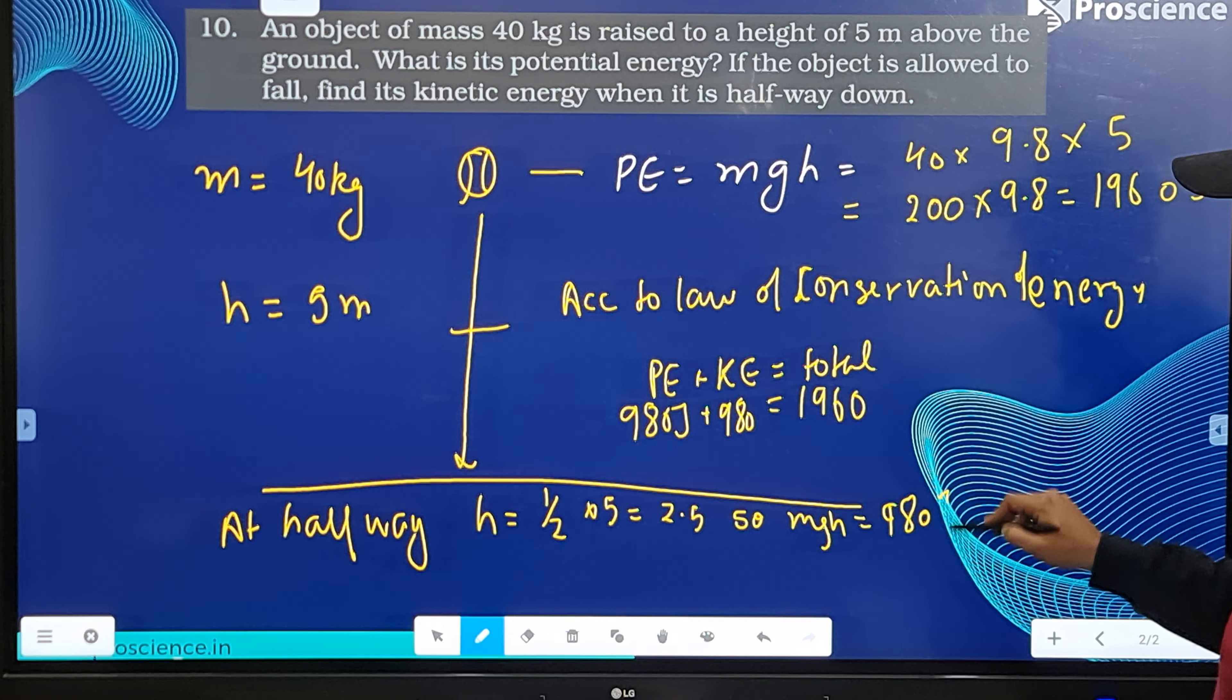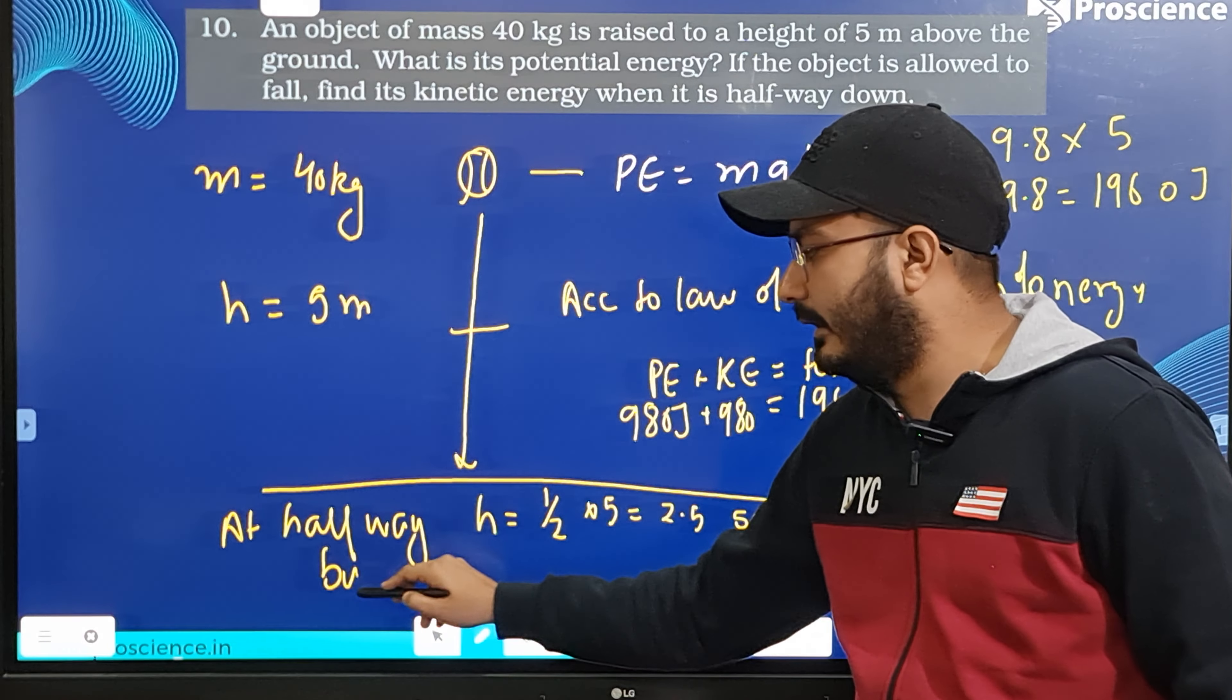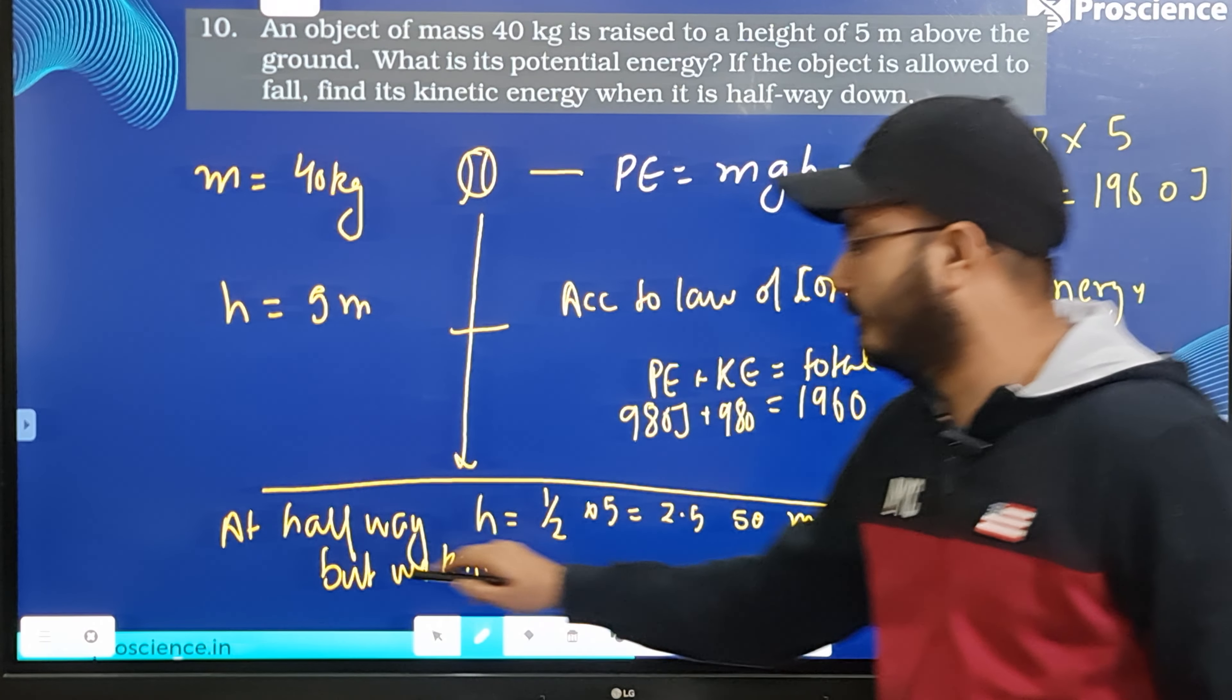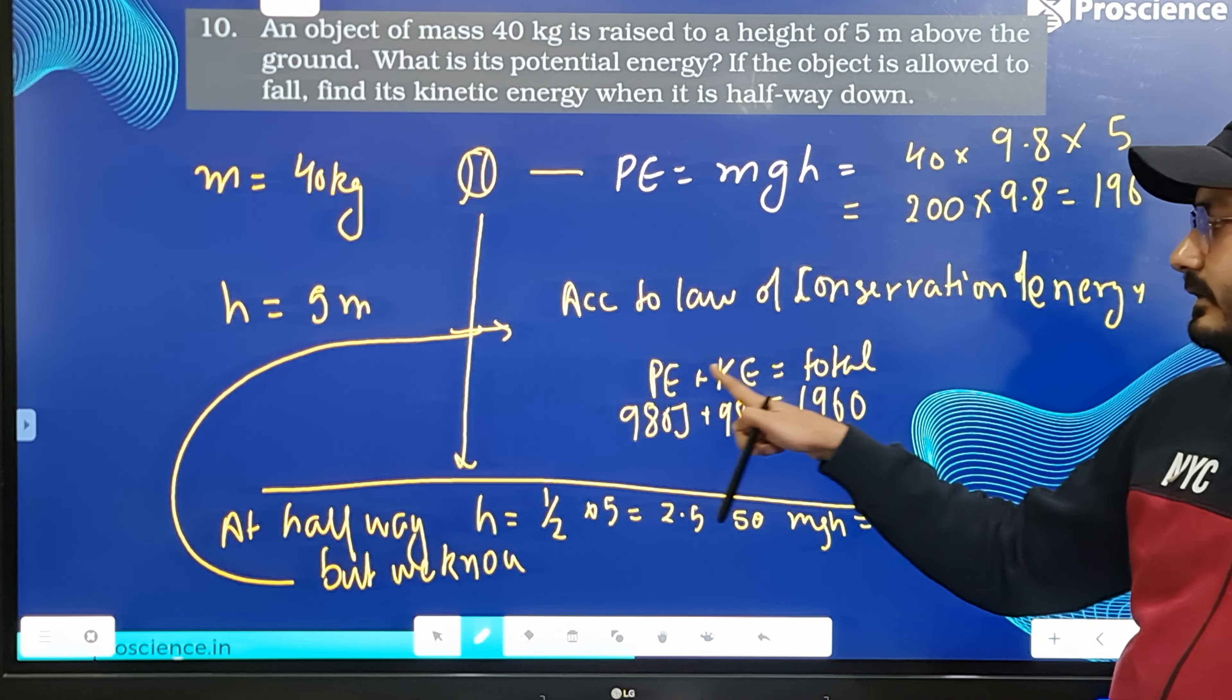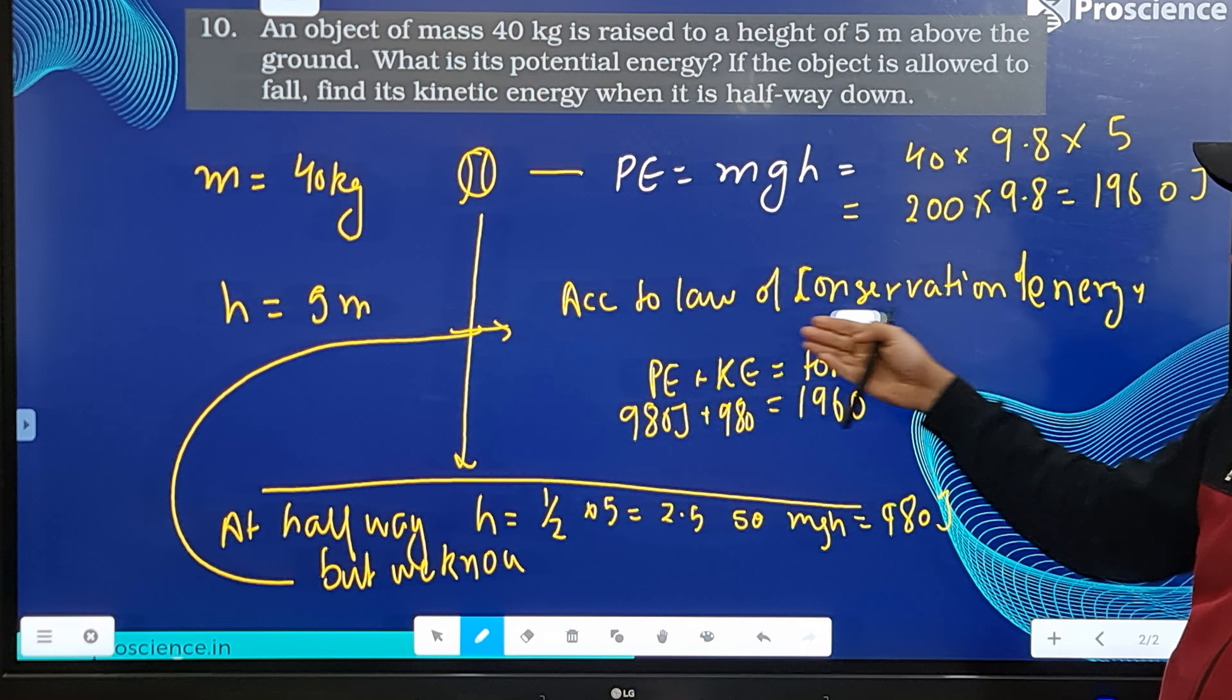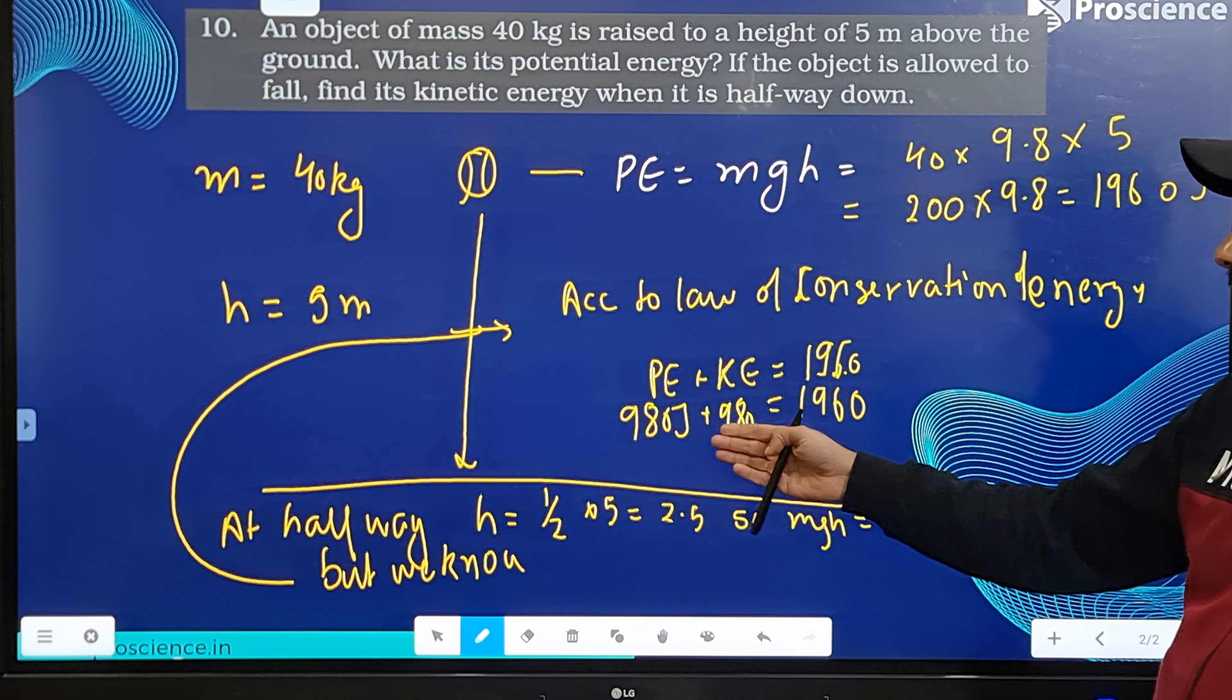According to law of conservation of energy, potential energy plus kinetic energy is constant. That constant is 1960. So if we let the kinetic energy be x, and potential energy is 980...